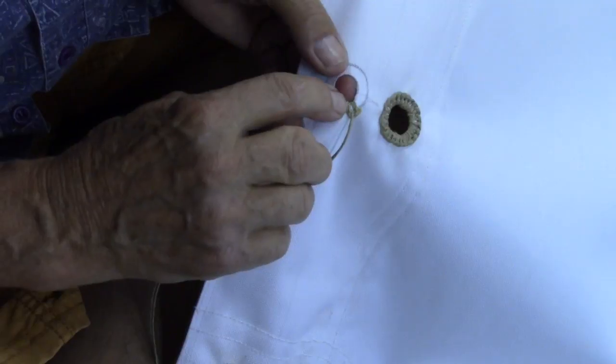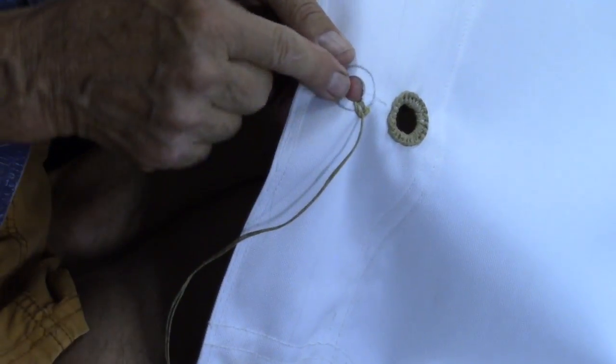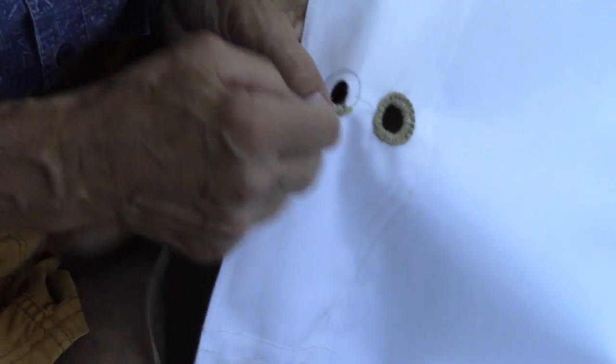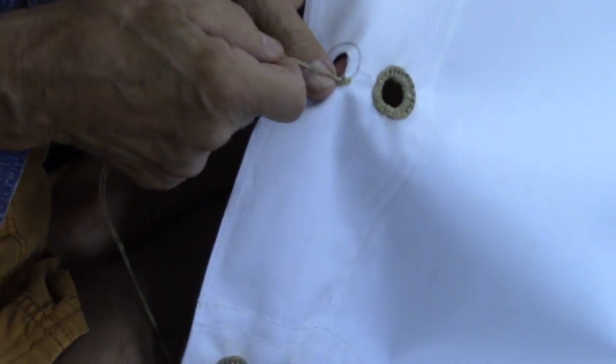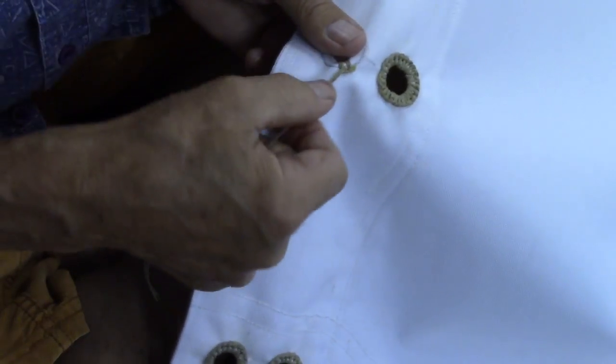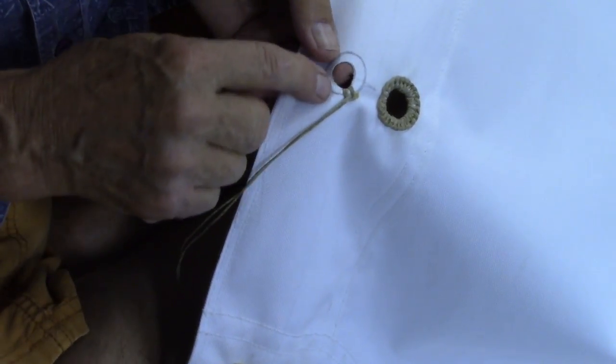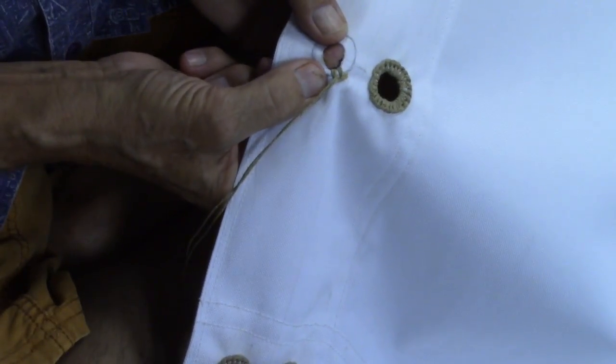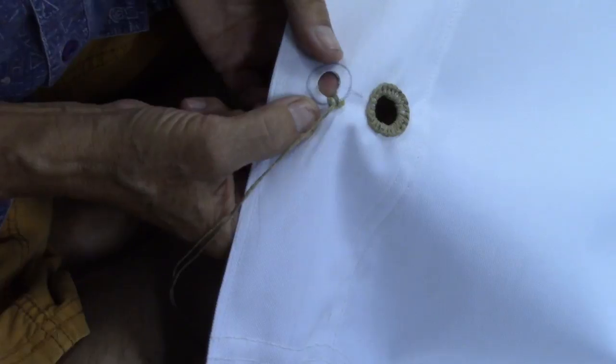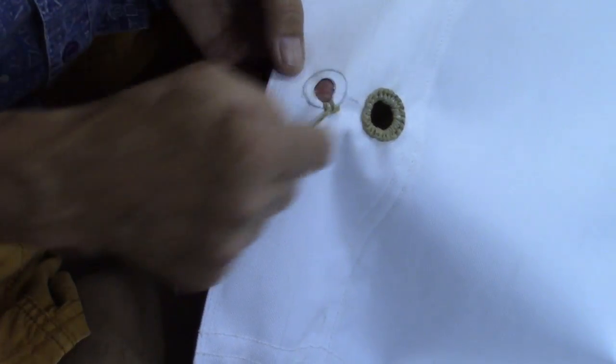Each time you make a tuck, put these threads right next to the previous one. You'll have to gauge how hard you pull this taut. It's going to start crimping or pulling this in together. You want to control that so that it's uniform all the way around.